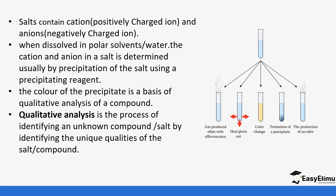When looking for these unique properties of a compound, we do different tests that help us understand what compound we are identifying. In qualitative analysis we may heat the compound and test the gases being produced, test if heat is absorbed or given out, observe color change — which is one of the most common ways of identifying compounds — observe formation of precipitate, which can be colored or uncolored, and also the production of an odor.